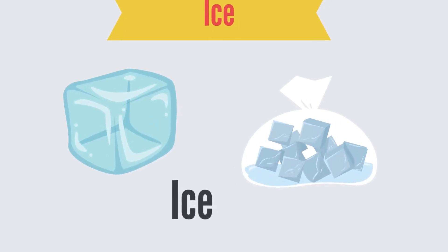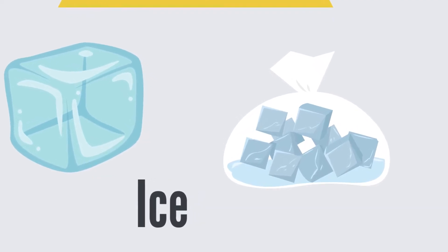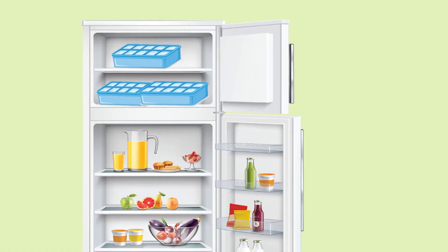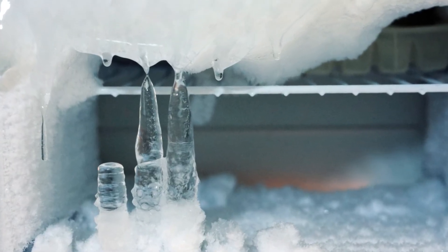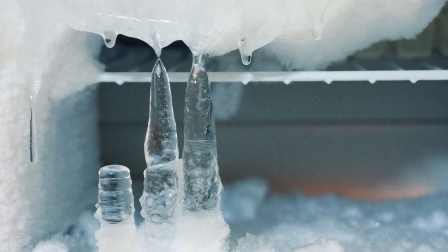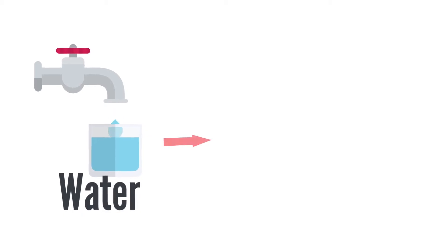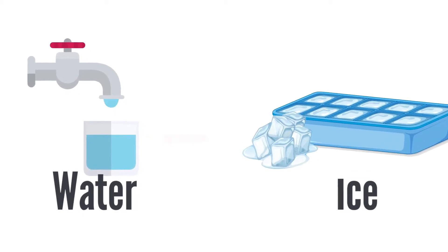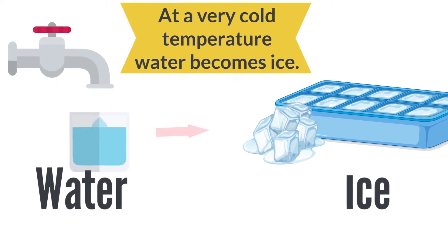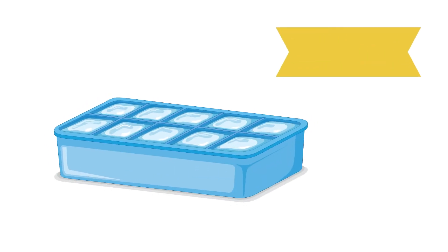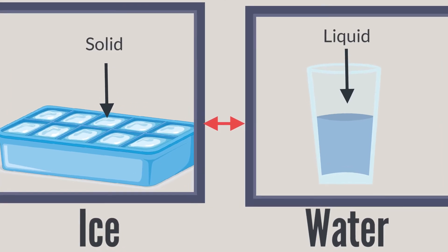Another form of water is called ice. How do we make ice? In the freezer, right? The freezer is super cold and can make liquid super cold, and it gets cold enough to turn water into ice. At very cold temperatures, water becomes ice. Ice is hard. This is called a solid form of water.